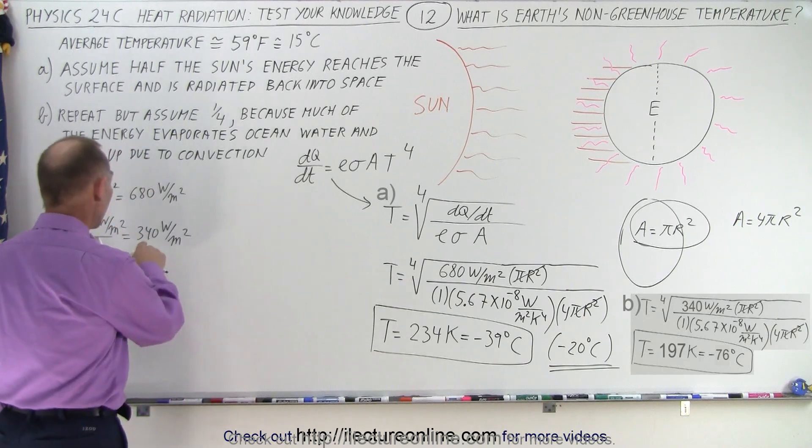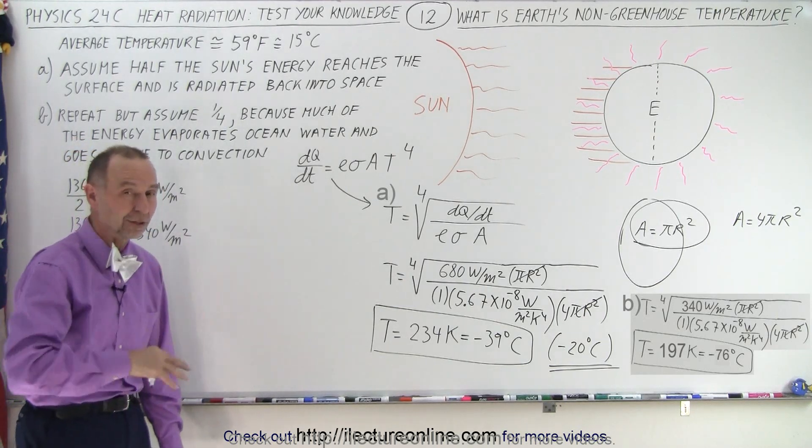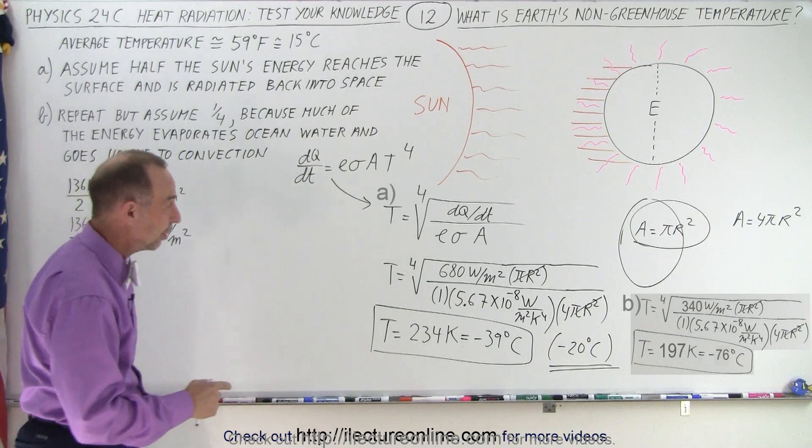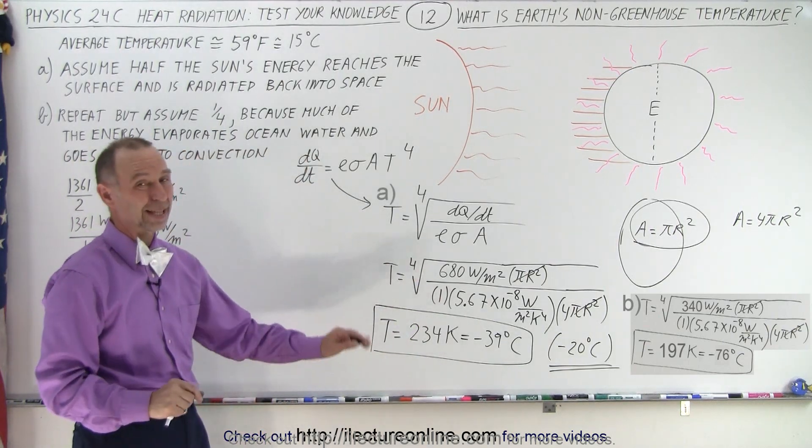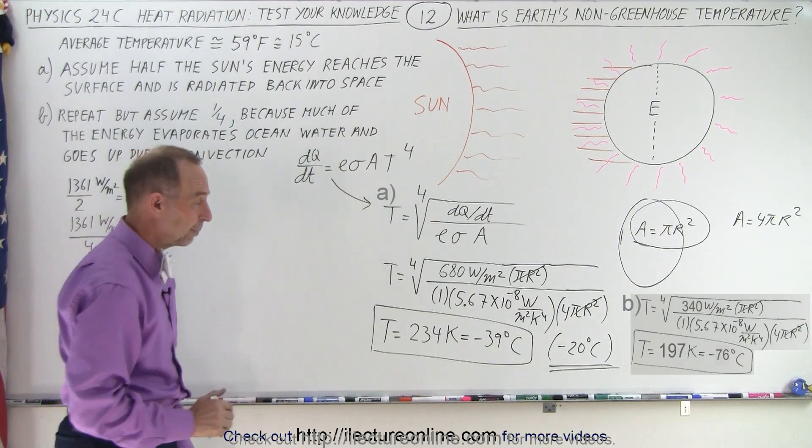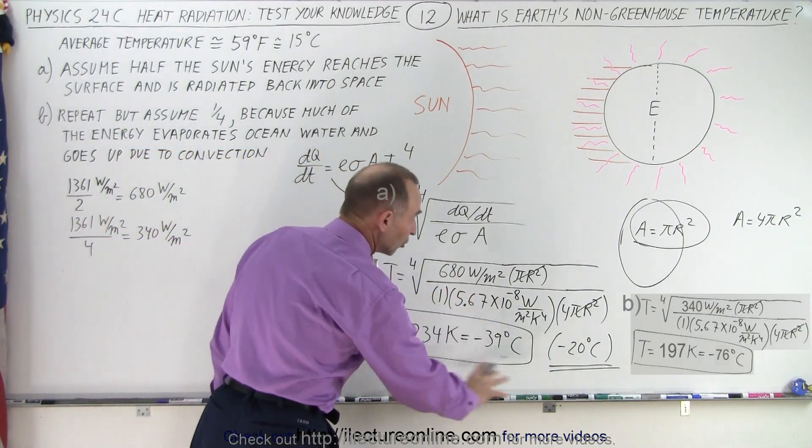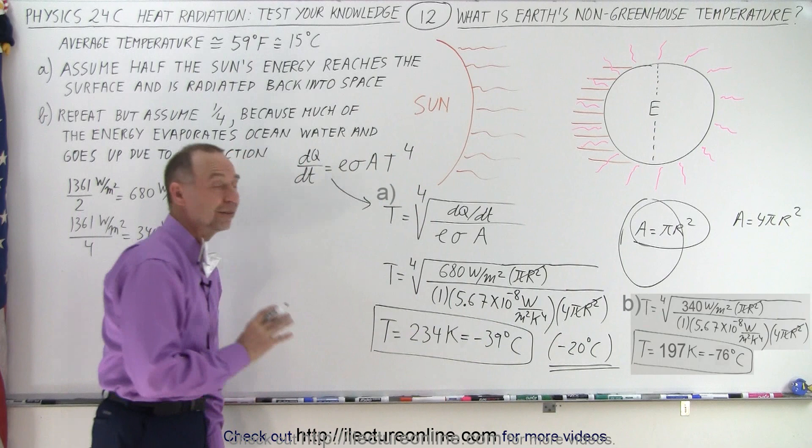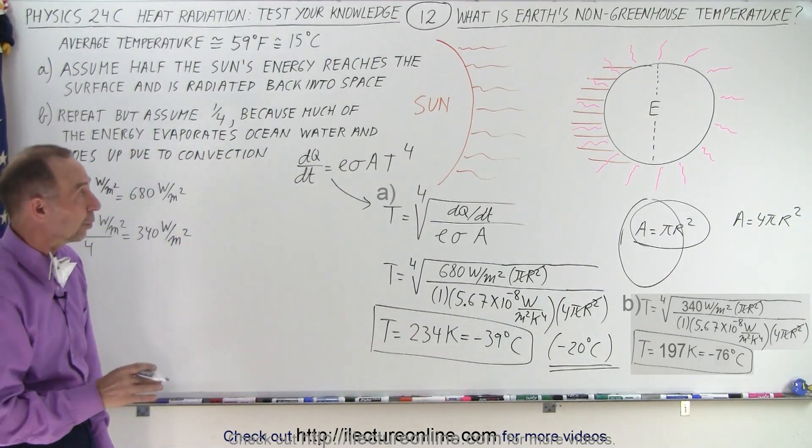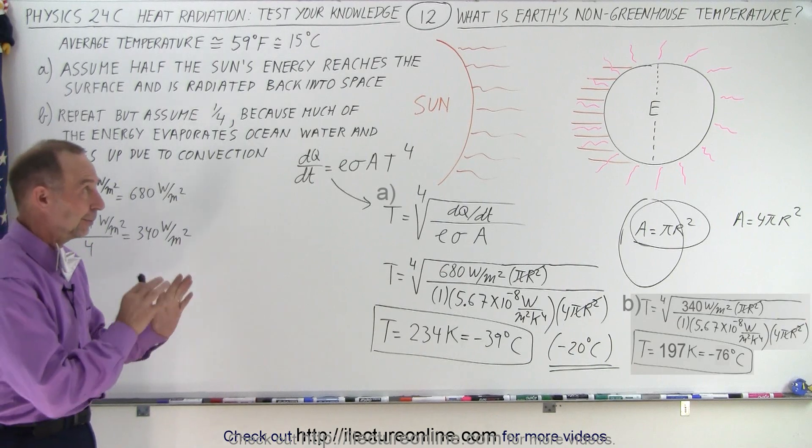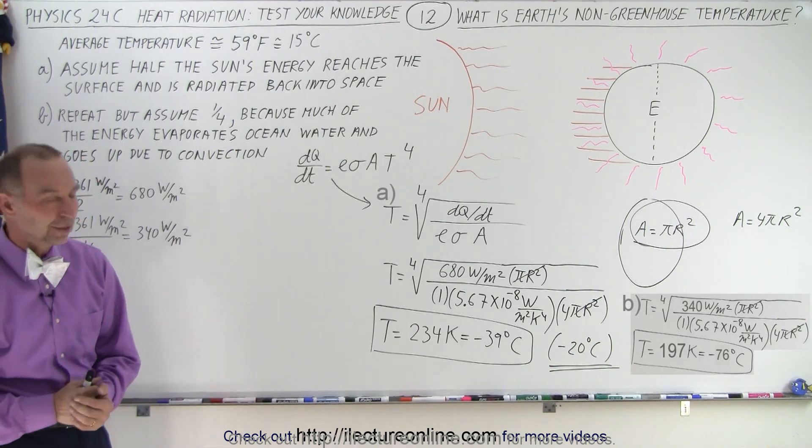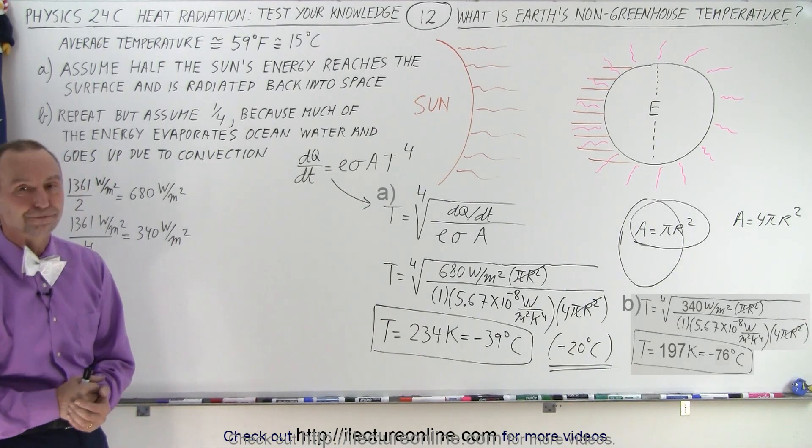And then of course if we change that to 340 watts per square meter because of all these other effects that we want to account for, we would end up with even a much smaller number than that. In other words, the earth would be then much much colder. But this gives us at least a good concept to work with to see that the earth would be relatively cold if there were no greenhouse gases. So luckily we have those and we're comfortably warm because of it. And that is how it's done.